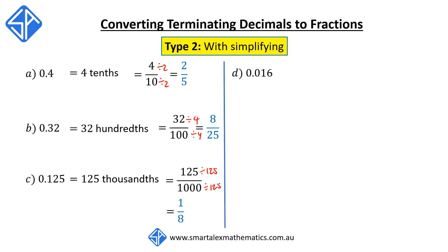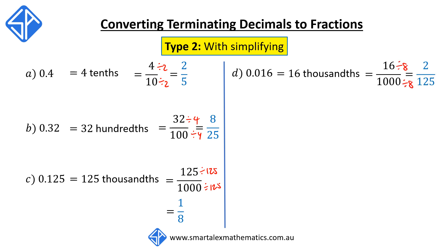Now we've got 0.016. Three digits after the decimal point, so this is equal to 16 thousandths, which is the same as 16 over 1000. We can divide the top and the bottom by 8, so we get 2 over 125.